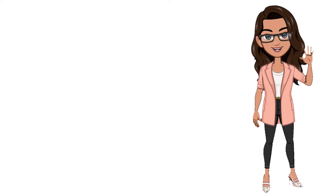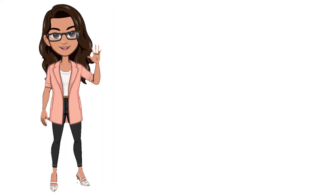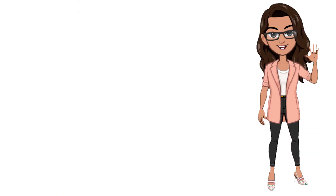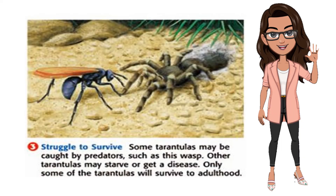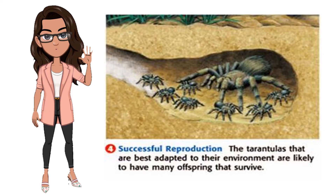Natural selection has four phases. First: overproduction. For example, a tarantula's egg sac may hold 500 to 1,000 eggs; some will survive and develop into adult spiders while some will not. Second: inherited variation — every individual has its own combination of traits; each tarantula is similar to but not identical to its parents. Third: struggle to survive — some tarantulas may be caught by predators such as wasps, others may starve or get a disease; only some will survive to adulthood. Lastly: successful reproduction — the tarantulas best adapted to their environment are likely to have many offspring that survive.